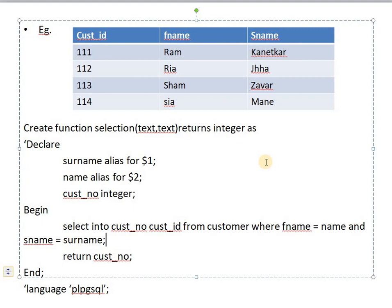I hope you understood the stored function — what the ALIAS keyword does, the purpose of the dollar sign notation, and how the SELECT INTO clause works. If this video was helpful, please subscribe to my channel, like the video, and hit the bell icon. In the next video we will see the concept of views. Thank you so much, stay tuned.